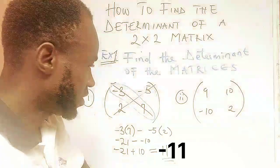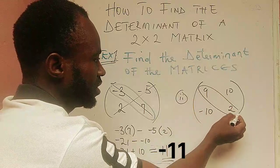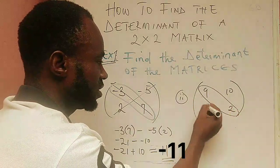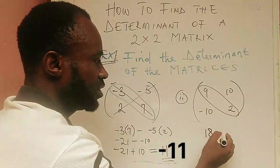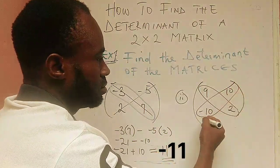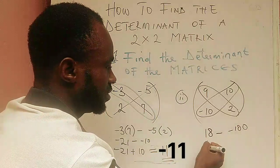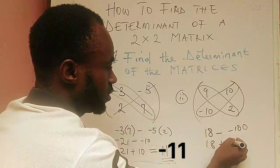We do the same thing for the second one. Our major diagonal is 9 and 2. So 9 times 2 is 18. Minus the minor diagonal: 10 times -10, that is -100. So 18 minus -100 is 18 plus 100.